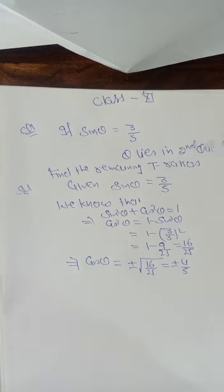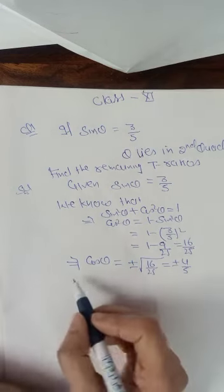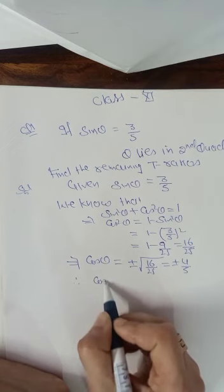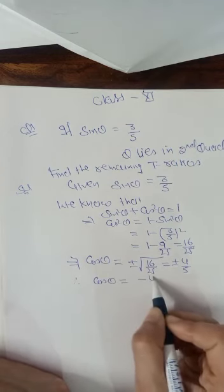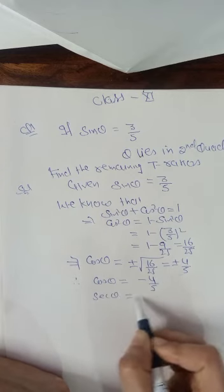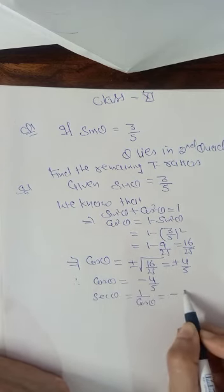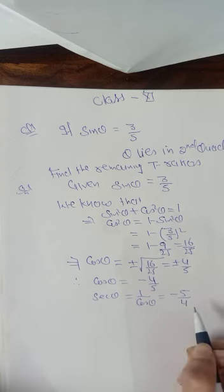It is given that θ lies in the second quadrant, and in the second quadrant only sine and cosec are positive; all remaining trigonometric functions are negative. Therefore, cos θ = −4/5. Now sec θ = 1/cos θ, so its value will be −5/4.